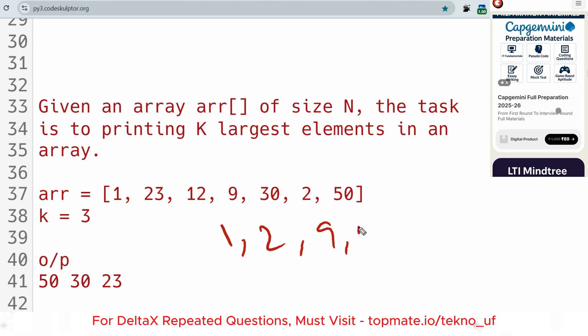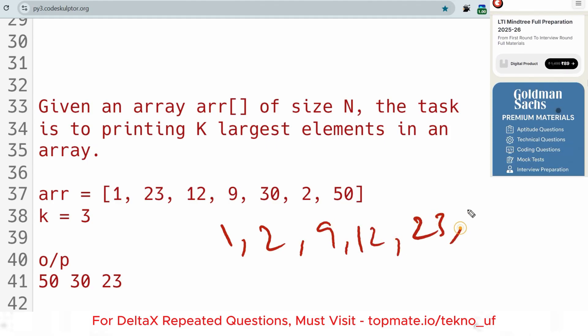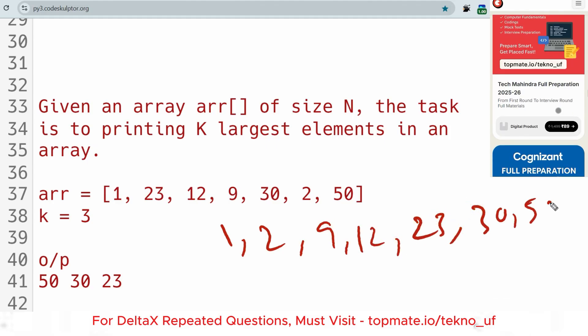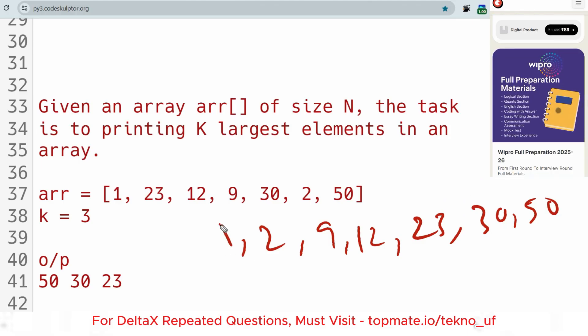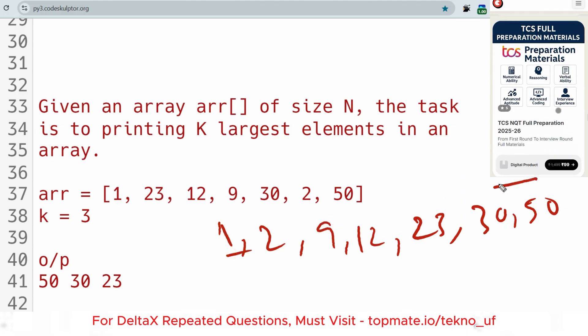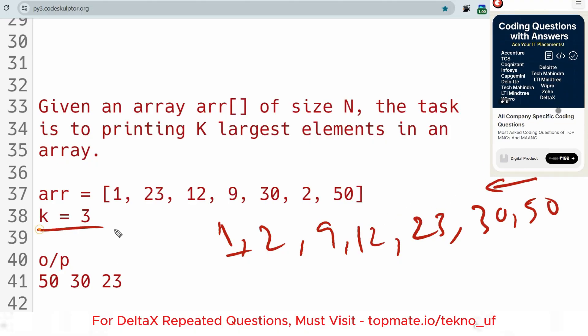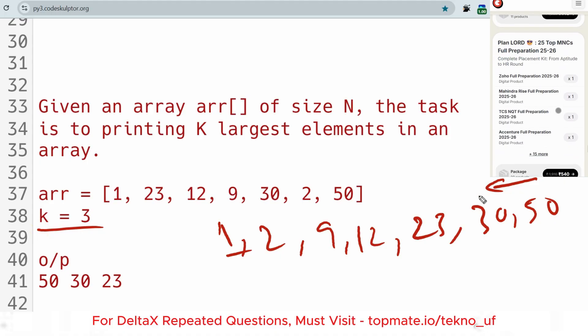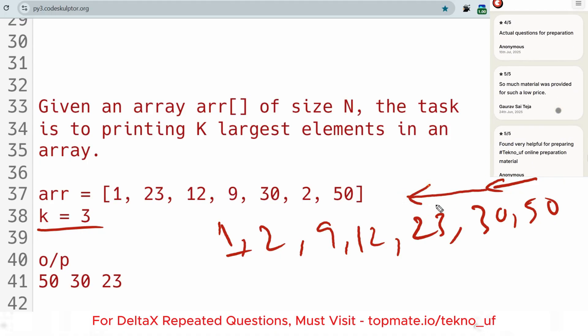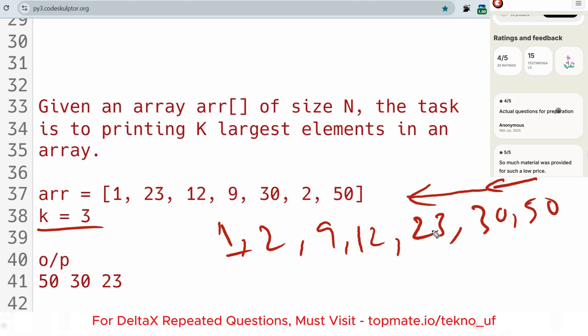So the largest values from 50, 30, and 23, this way we can go. K is equal to 3, you have to print the total three largest values from this array: 50, 30, and 23. This is the output.